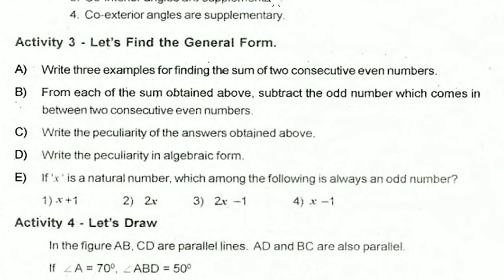I will say consecutive even numbers are 2, 4, 6, 8, 10, 12, 14. That is the sum — those are the 3 examples.